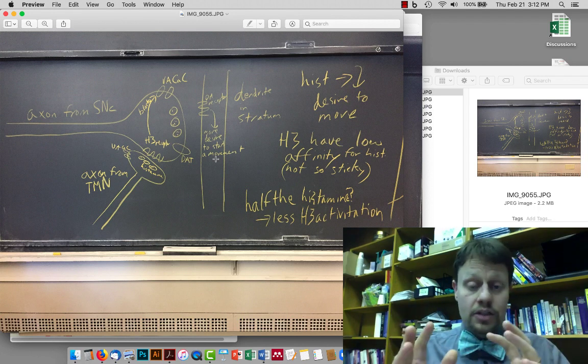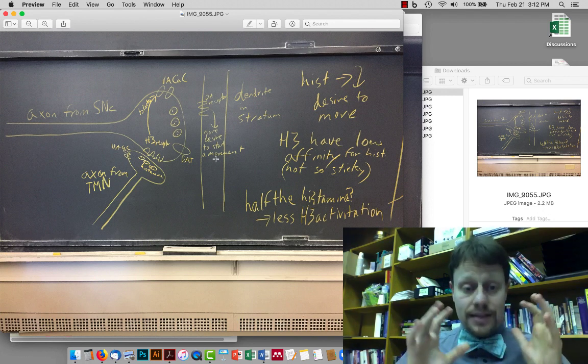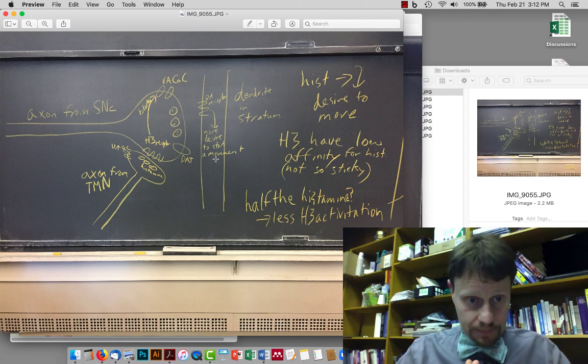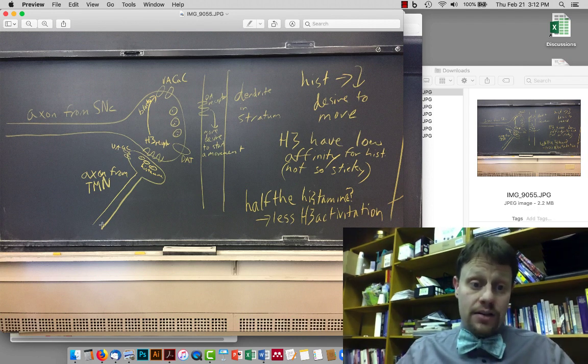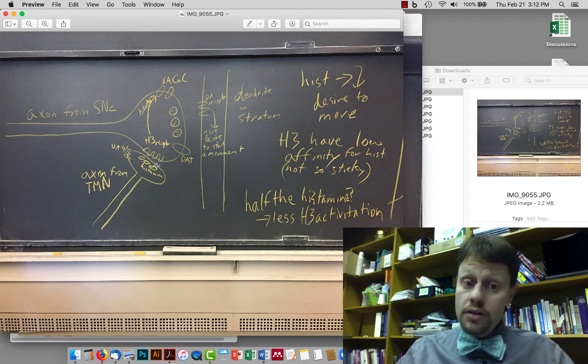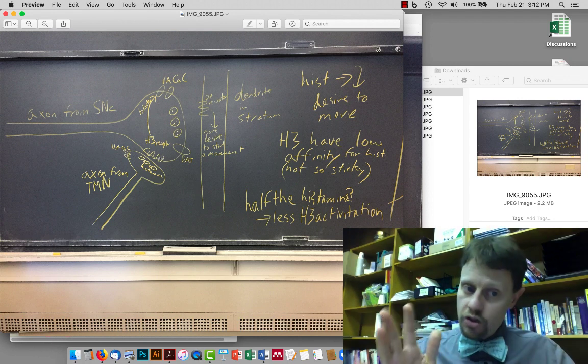Dopamine activation here increases the desire to move. There's some complexity in D1 and D2. You should review that, but I'm not going to go over it right now. At these synaptic connections, some of them, you will find an axon from the tubero-mammillary nucleus makes a synaptic connection not onto a dendrite, but onto the presynaptic terminal of this dopamine-releasing neuron. There you find a G-protein-coupled receptor, but it's not an H1 receptor. It's an H3 receptor.